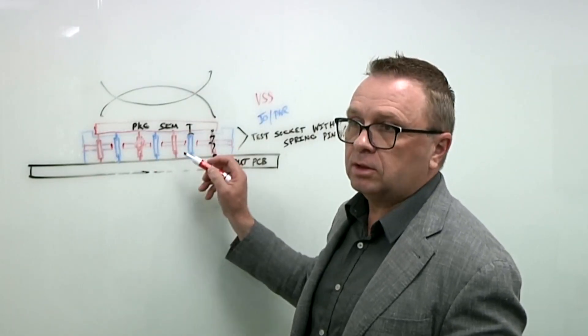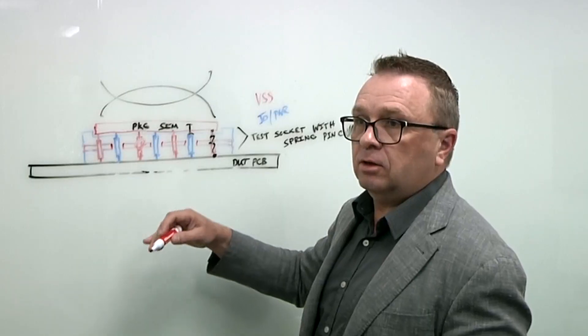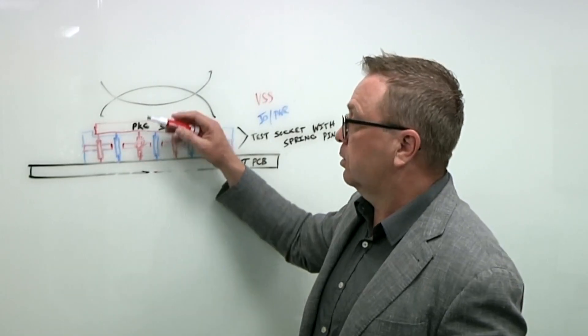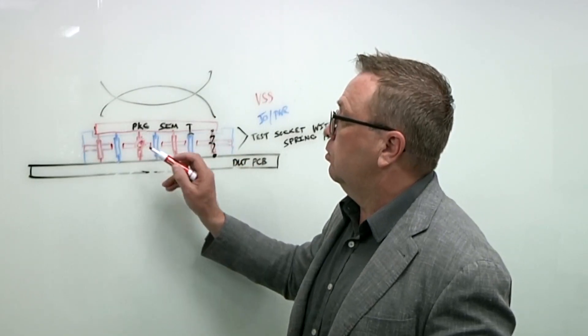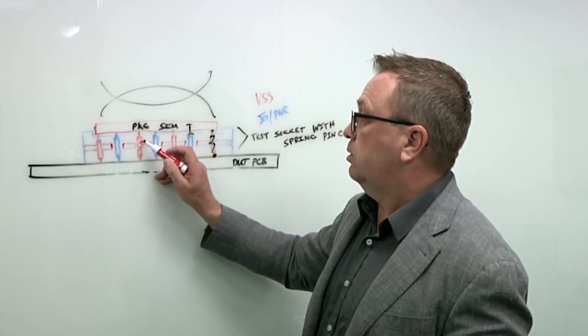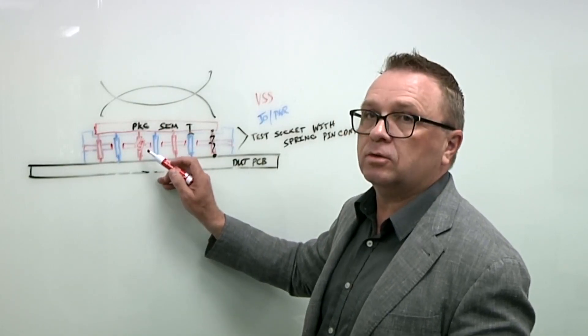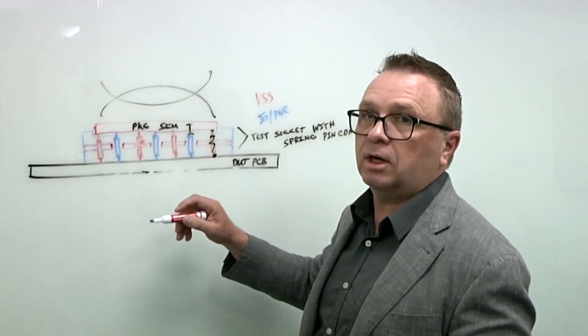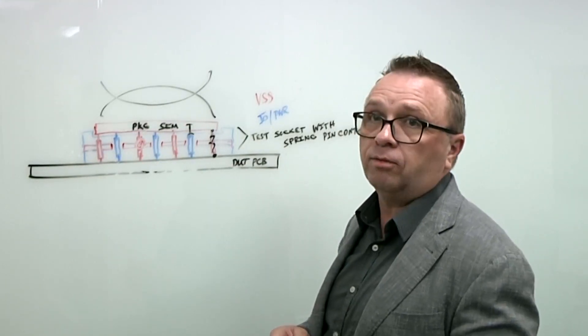So we have ways to do this offline outside of the test cell well before. So we characterize the sockets for how long this junction will last, the integrity of it, what the resistance will be over time, not to mention the contact resistance over time as well. So we do life cycle studies offline.